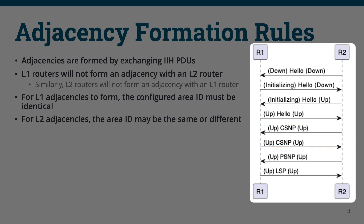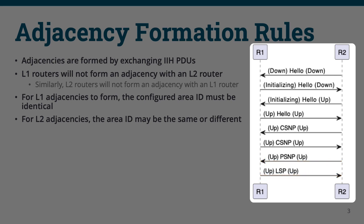When R1 and R2 investigate the CSNPs and find LSPs which are not contained in one another's LSDB, they will send a PSNP for each LSP which they are missing to request the most up-to-date copy from their neighbor. Once their LSDBs are synchronized, R1 and R2 are considered full neighbors.